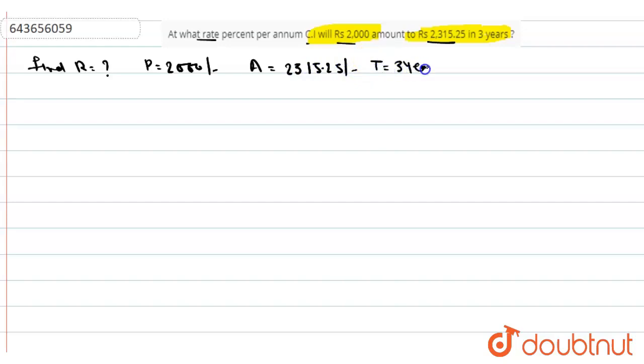In this question, we need to find the rate of interest. Let's proceed. The amount formula is A equals P times (1 plus R upon 100) to the power T.